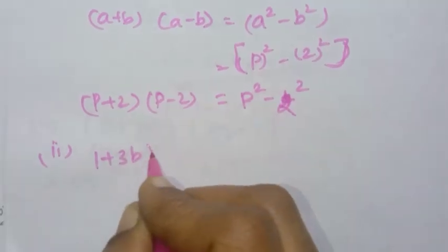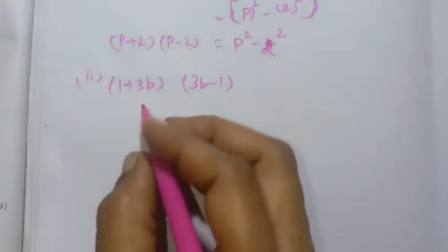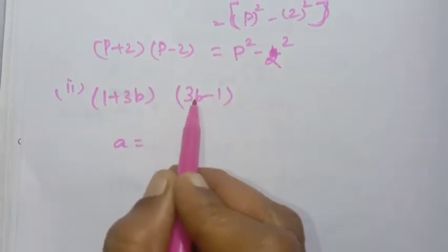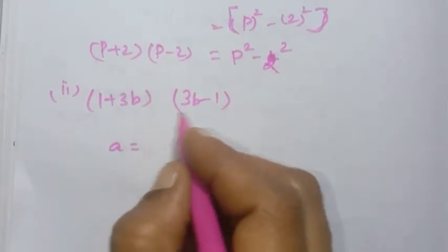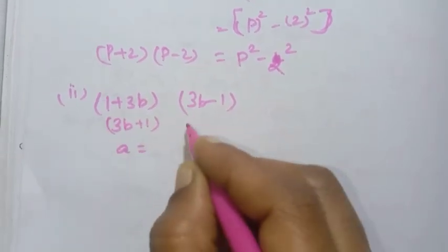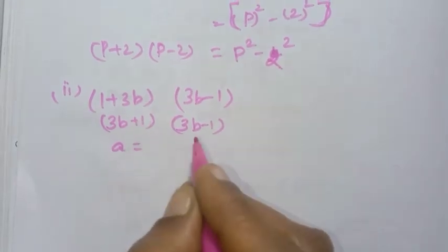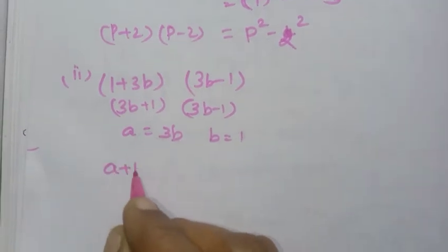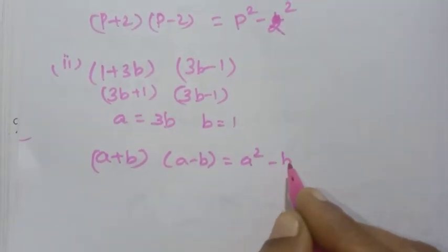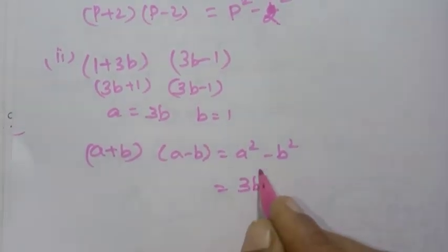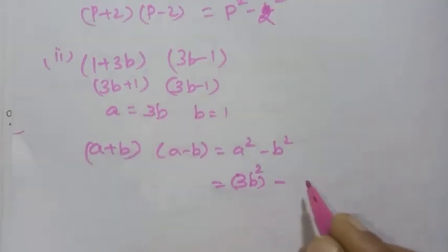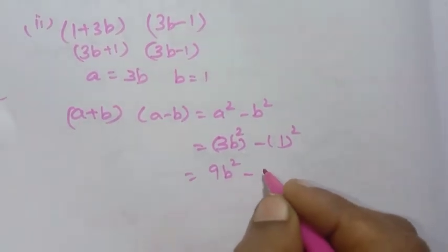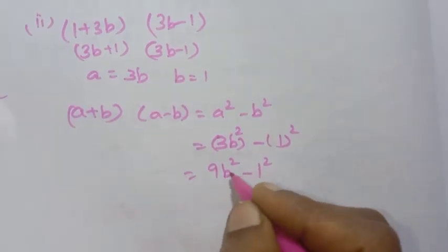Second sum: 1 plus 3b into 3b minus 1. We can rewrite this as 3b plus 1 into 3b minus 1, which matches a plus b into a minus b. So a equals 3b and b equals 1. Applying the formula: 3b squared minus 1 squared equals 9b² − 1.